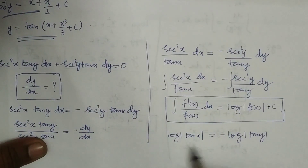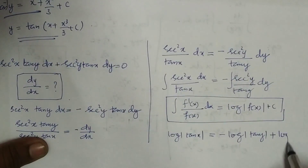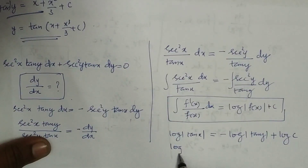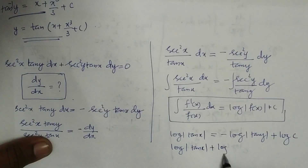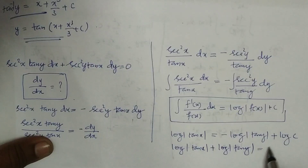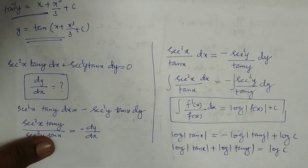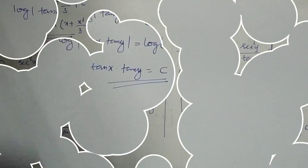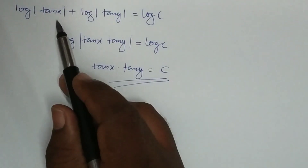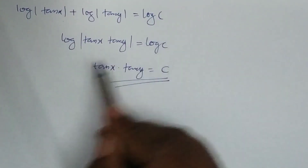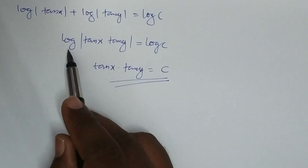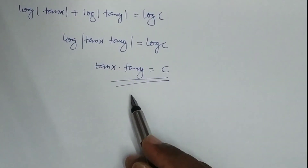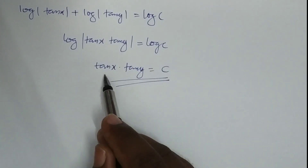The result is log|tan(x)| = -log|tan(y)| + constant c. Using log properties, log|tan(x)| + log|tan(y)| = log c, which gives log|tan(x)·tan(y)| = log c, so tan(x)·tan(y) = c. This is the final answer.